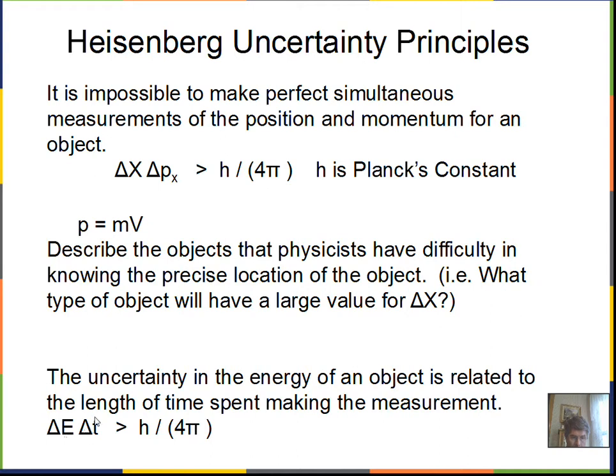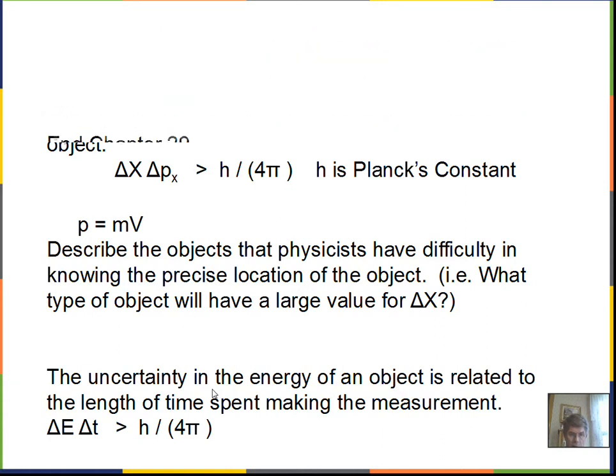If we measure for a long time or have some situation where the system is in the same state for a long time, if delta t is a big number, then delta e can be a small number. And again, this has some consequences for the atom and the way the atom emits light. The Heisenberg uncertainty principle.